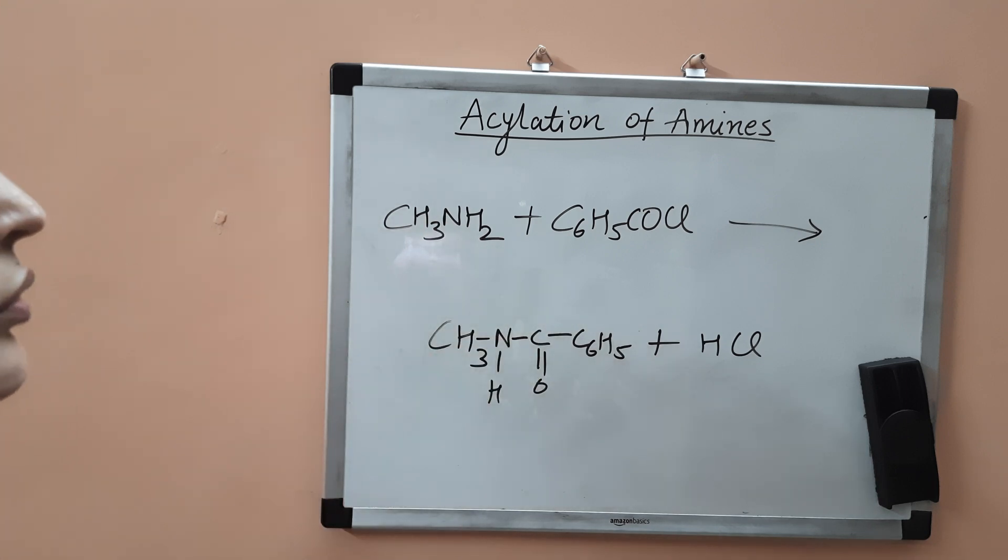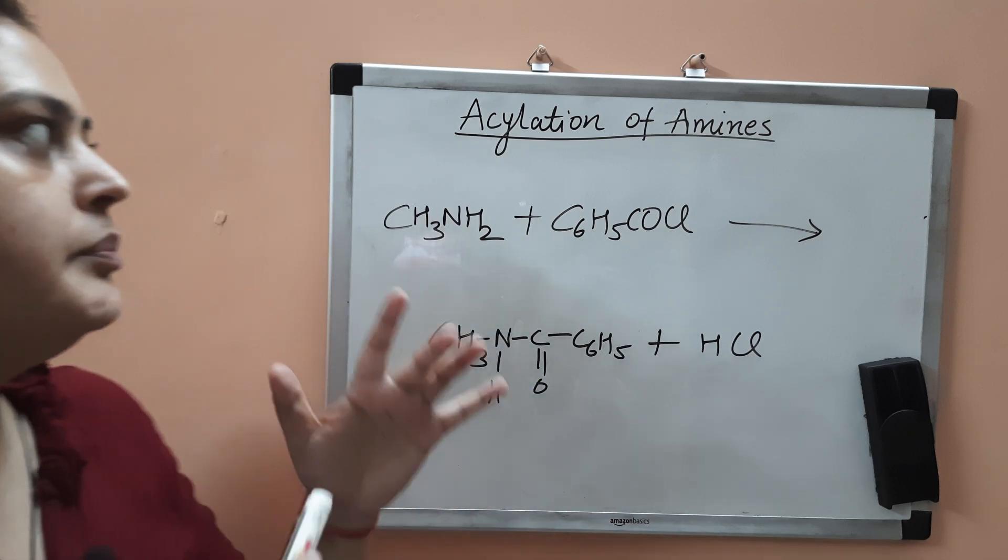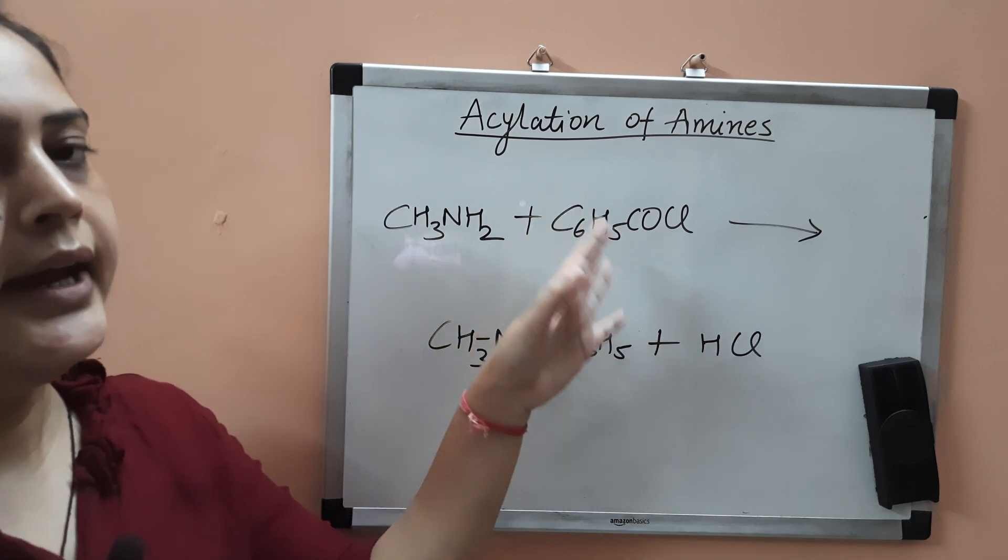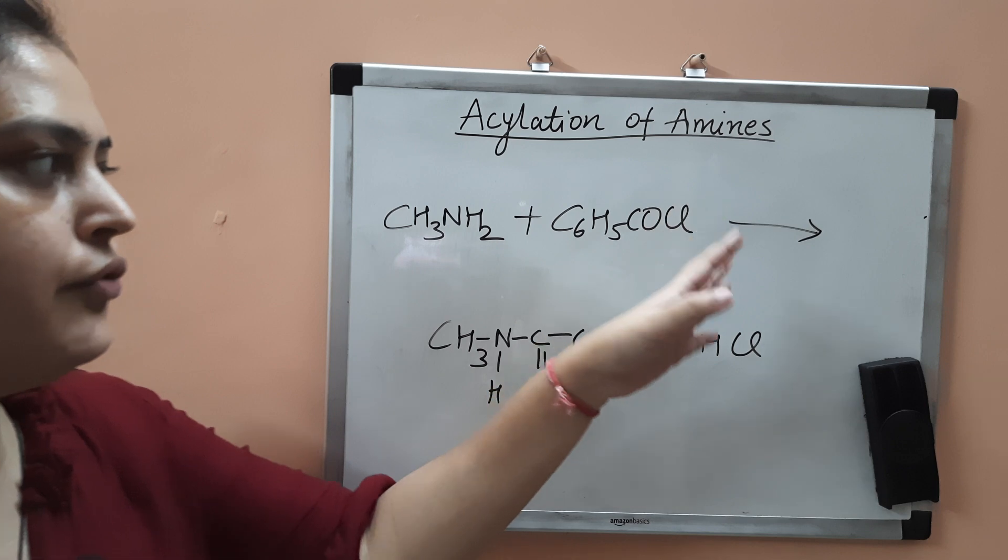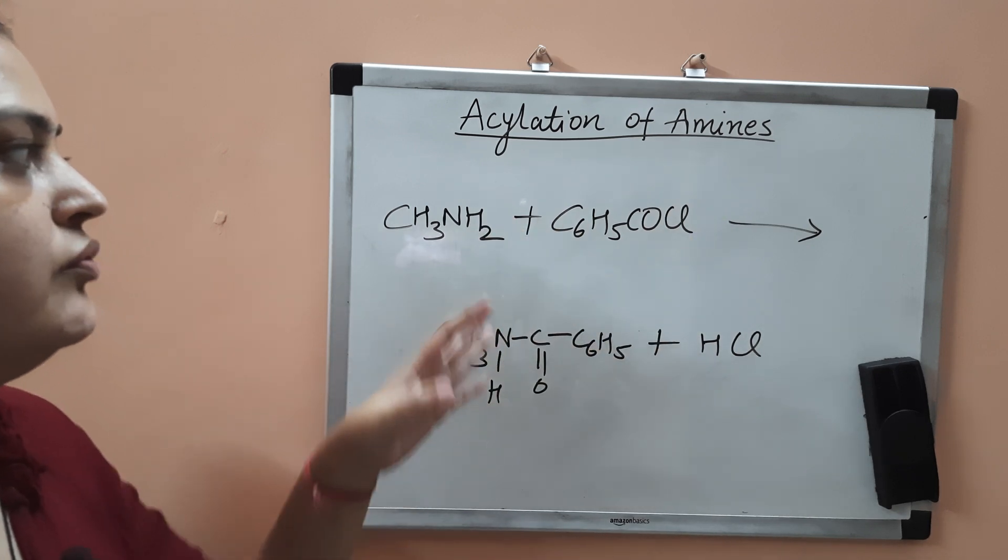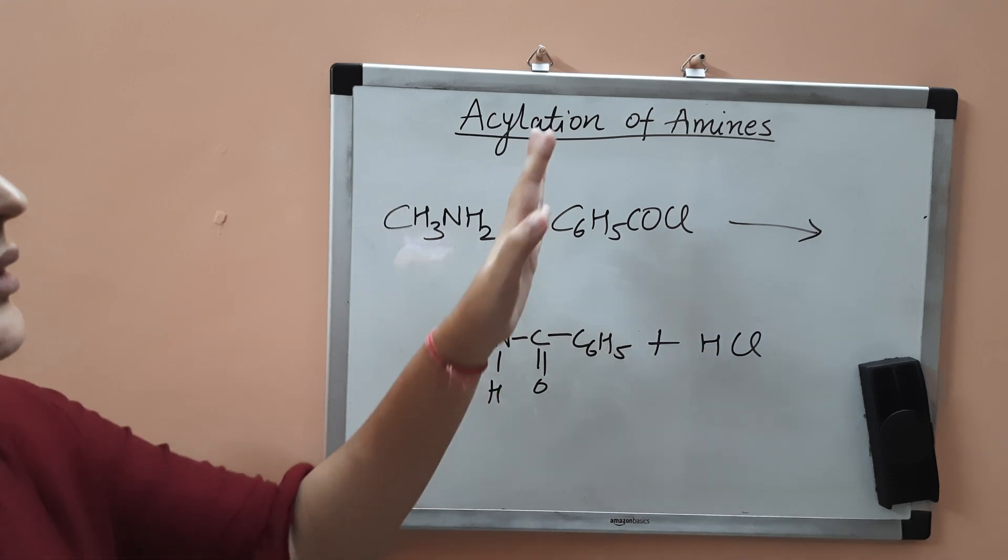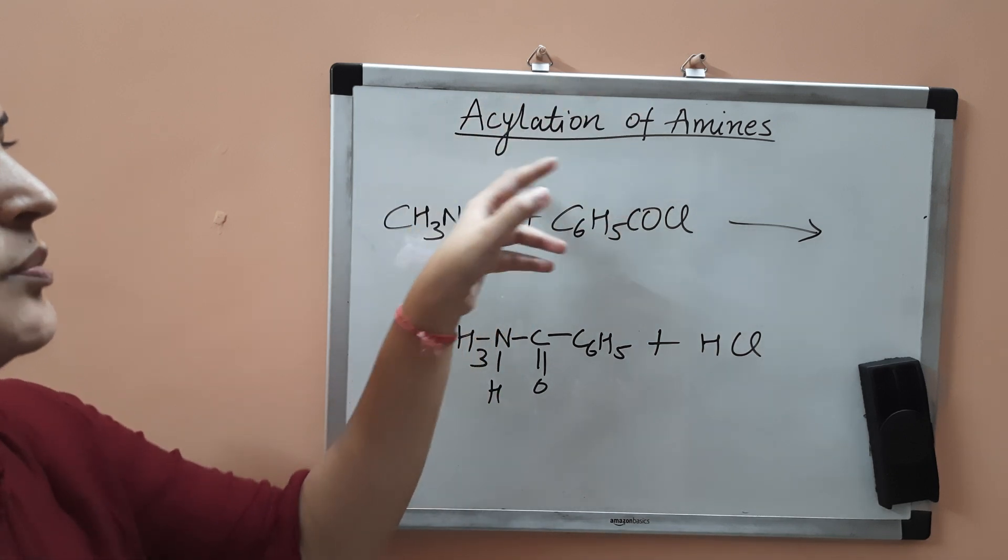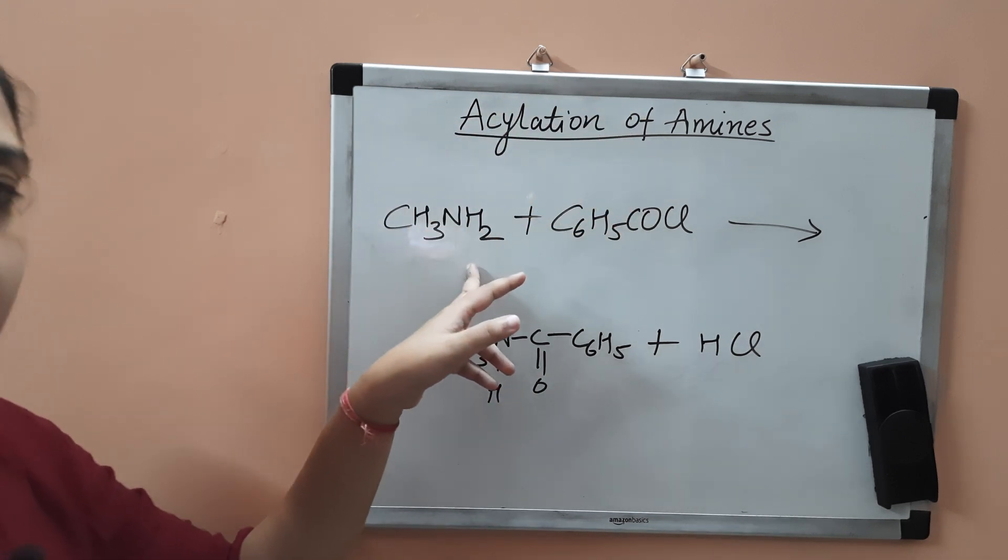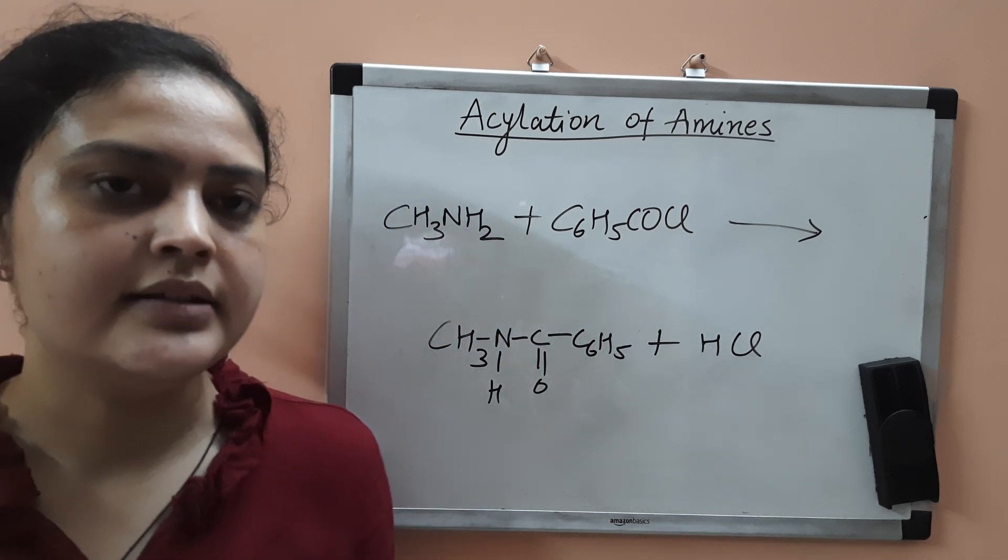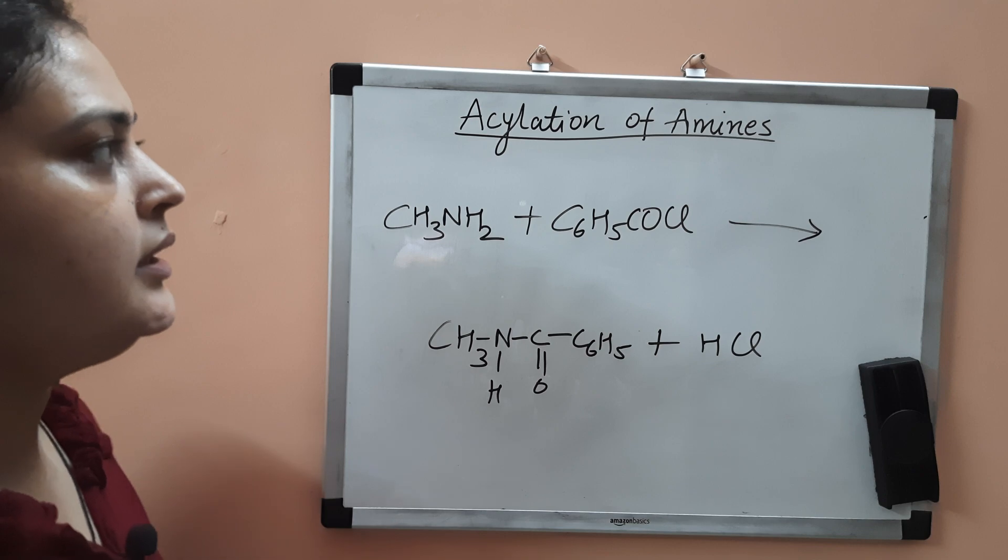We have concluded that primary and secondary amines react with acid chlorides, anhydrides, or esters to form amides by removal of hydrogen atom from the amines and attachment of acyl group to the amine. This was all about today's class. I hope you have understood today's topic. Thank you.